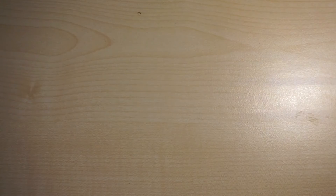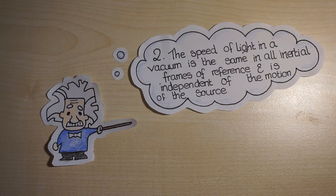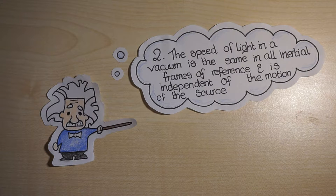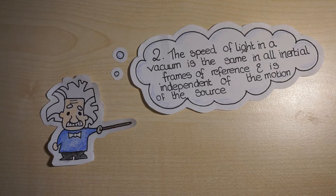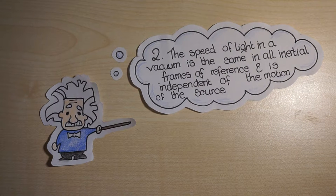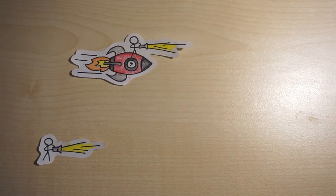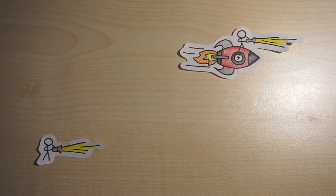The second postulate is that the speed of light in a vacuum is the same in all frames of reference and is independent of the source. In an inertial frame of reference, however fast the source of light is moving, it won't change the speed of the light. So if you have a really speedy torch and a torch that's still, the speed of light coming out of both is the same.